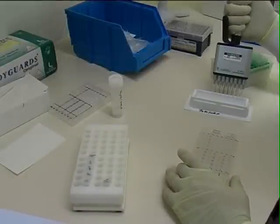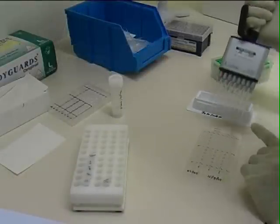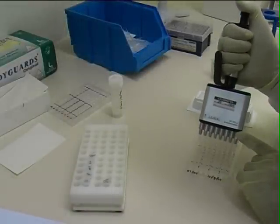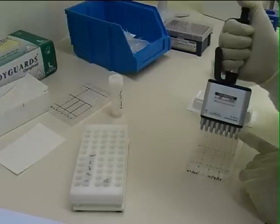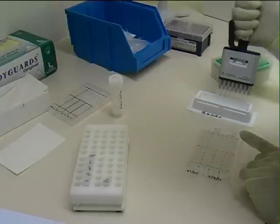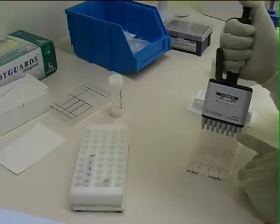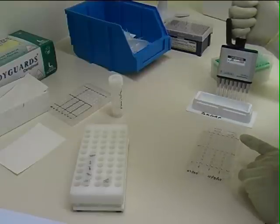After half an hour, any unbound material is discarded and the plate is washed six times as before. Then peroxidase labelled anti-human IgG is added to each well. The plate is sealed and incubated at room temperature for an hour.